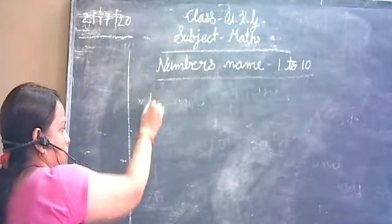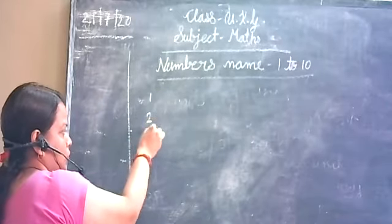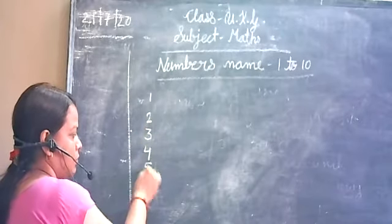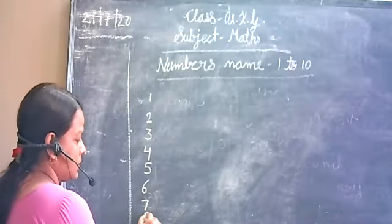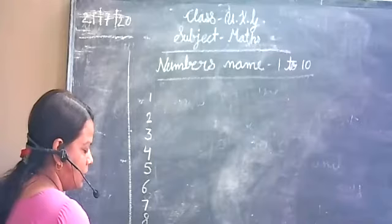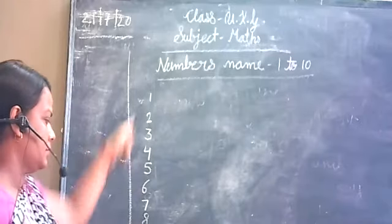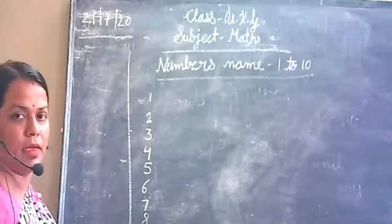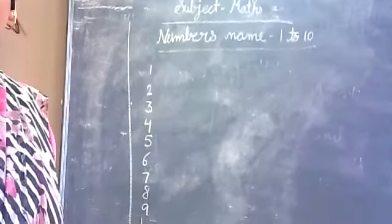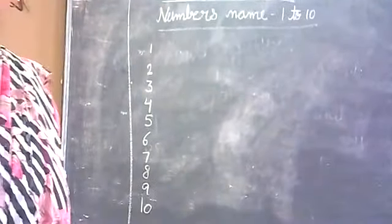1, 2, 3, 4, 5, 6, 7, 8, 9, and 10. This is Numbers. Okay? What is this 1 to 10? This is our number. Now names. Now we will write names. It means spelling.